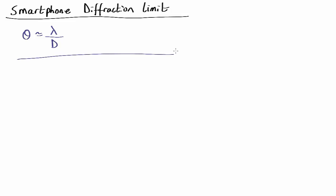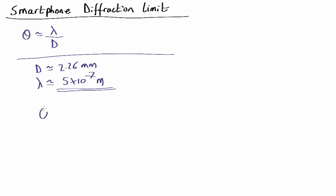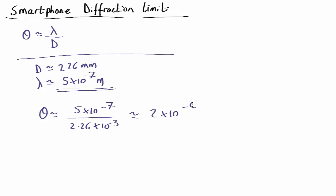Using my own smartphone, the Samsung Galaxy S6, the diameter of the lens is 2.26 millimeters. The wavelength of visible light is about half a micrometer — about 5×10⁻⁷ meters — that would be yellow light in the middle of the spectrum, ranging from about 4×10⁻⁷ for blue up to about 7×10⁻⁷ for red. So our diffraction limit is roughly 5×10⁻⁷ divided by 2.26×10⁻³, which is about 2×10⁻⁴ radians.